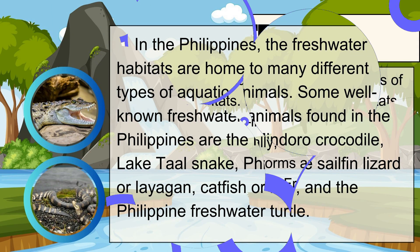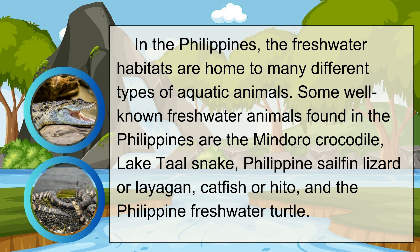In the Philippines, the freshwater habitats are home to many different types of aquatic animals. Some well-known freshwater animals found in the Philippines are the Mindoro crocodile, Lake Taal snake, Philippine sailfin lizard or laganap, catfish or hito, and the Philippine freshwater turtle.